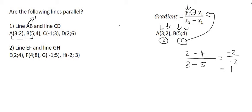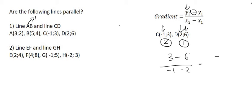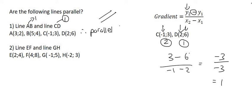Now let's work out the gradient of CD. I'll call this point number 2 and this point number 1. So the Y value of point number 2 is 3, minus the Y value of point number 1, which is 6, over the X value of point number 2, which is minus 1, minus the X value of point number 1, which is 2. The top gives me minus 3, the bottom gives me minus 3, and minus 3 divided by minus 3 is 1. So the gradient of CD is 1. And because line AB and line CD have the same gradient, therefore they are parallel.